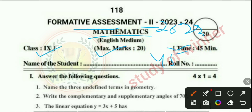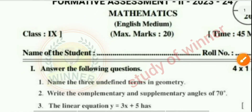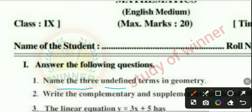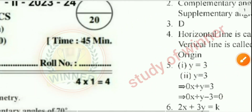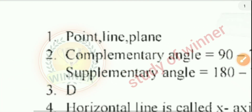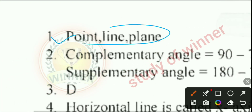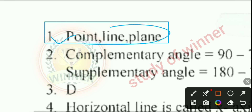The first question: Name three undefined terms in geometry. The answer is: point, line, and plane are the three undefined terms in geometry.